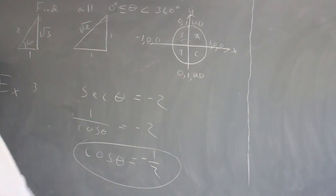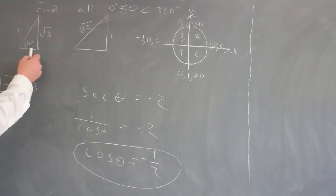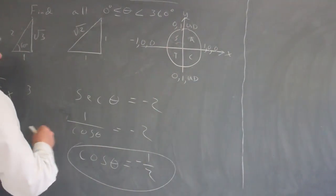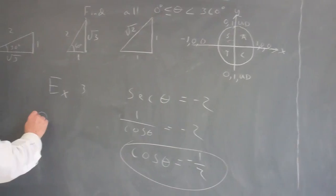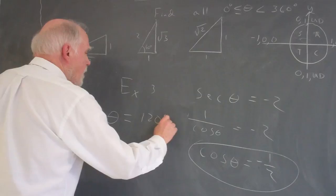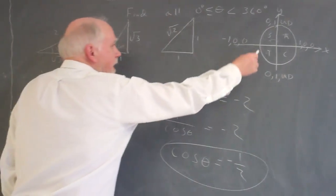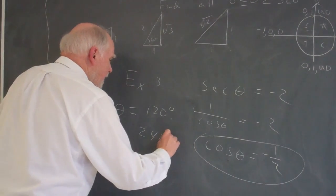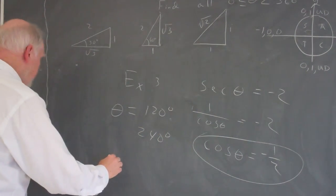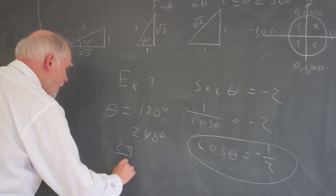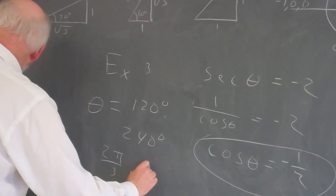So what I'm going to do here is, well, the reference angle is going to be 60 degrees. So the 60 degree angle in the second quadrant is going to be 120 degrees would be one answer. And then over here, it would be 240 degrees. And in radians, that would be 2 pi over 3 and 4 pi over 3.